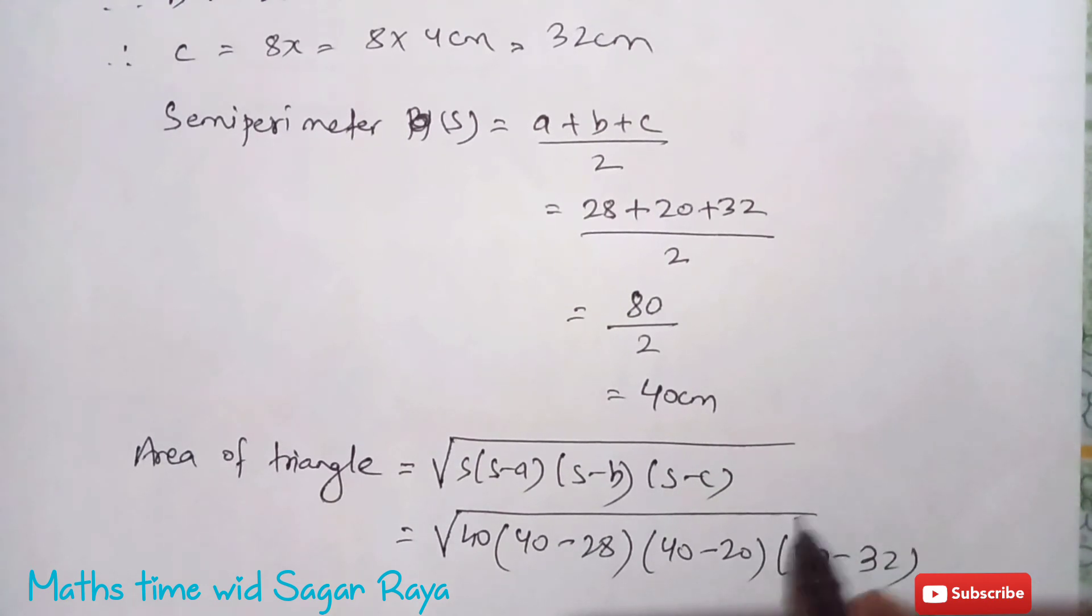And then 40 into, 40 minus 28 is 12, 40 minus 20 is 20, and 40 minus 32 is 8.